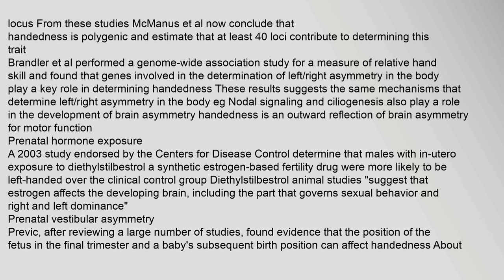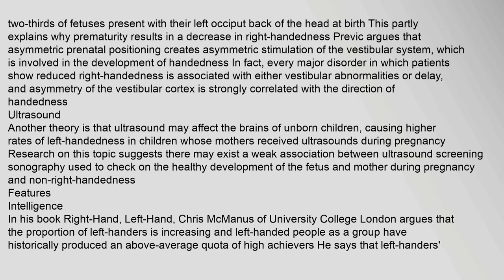Prenatal vestibular asymmetry: Previc, after reviewing a large number of studies, found evidence that the position of the fetus in the final trimester and a baby's subsequent birth position can affect handedness. About two-thirds of fetuses present with their left occiput at birth. This partly explains why prematurity results in a decrease in right-handedness. Previc argues that asymmetric prenatal positioning creates asymmetric stimulation of the vestibular system, which is involved in the development of handedness. Every major disorder in which patients show reduced right-handedness is associated with either vestibular abnormalities or delay, and asymmetry of the vestibular cortex is strongly correlated with the direction of handedness.